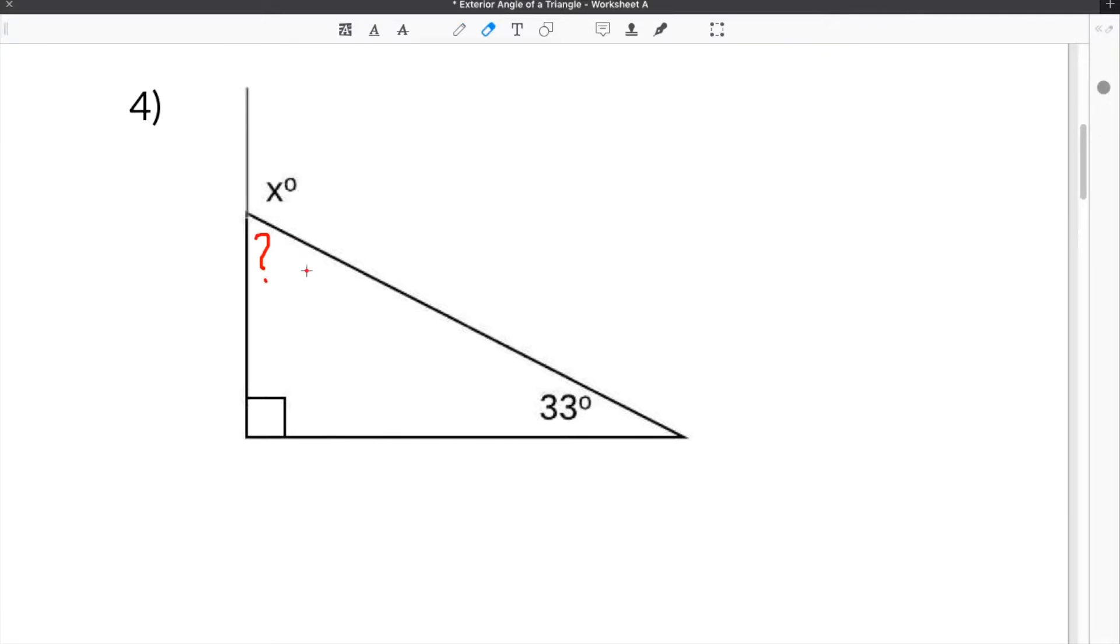In the other problem, we could have just taken this angle, subtracted it from 180, and it would have given us the angle that we need to figure out. But in the case of this problem, we do not have that.